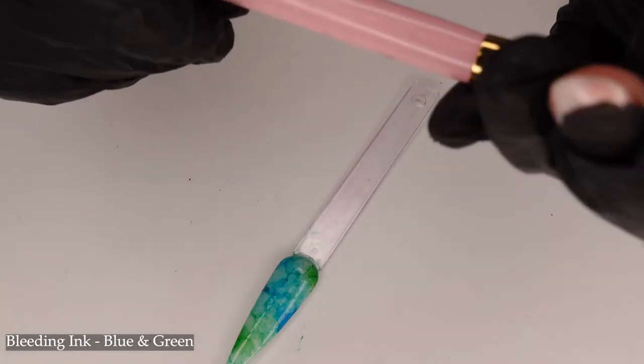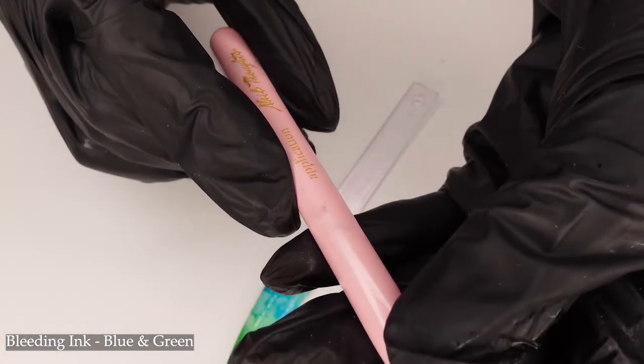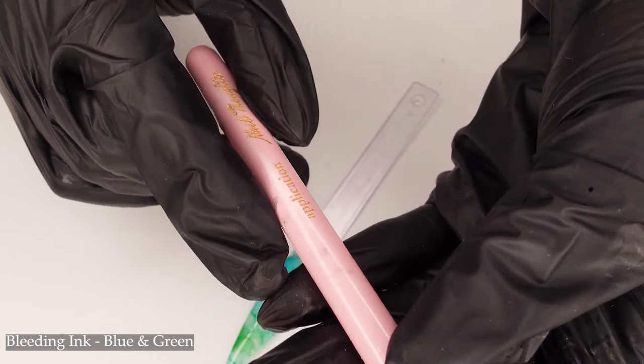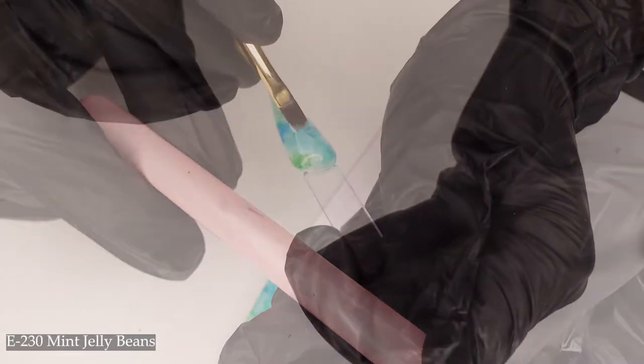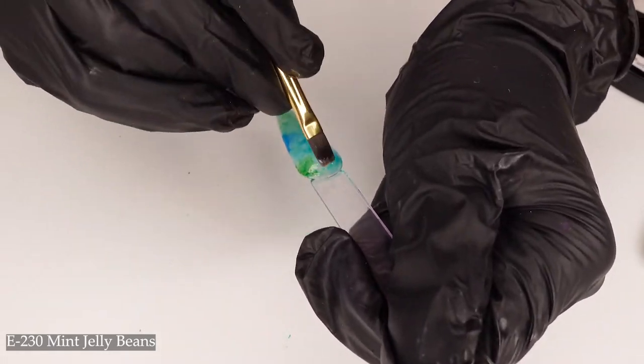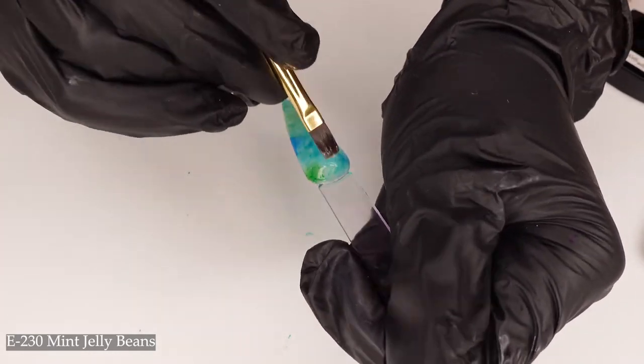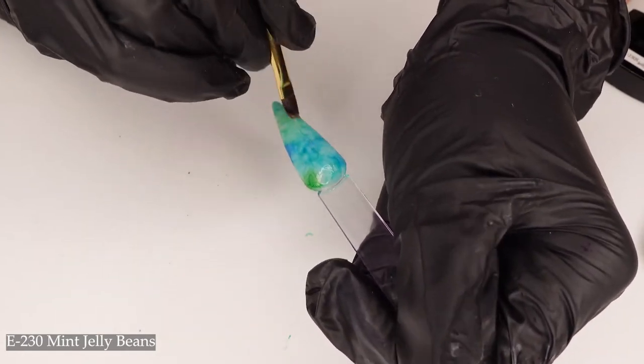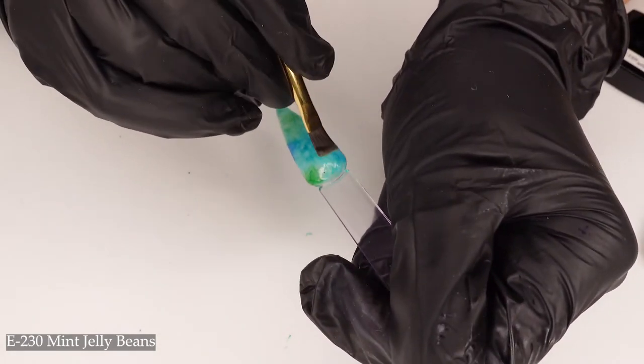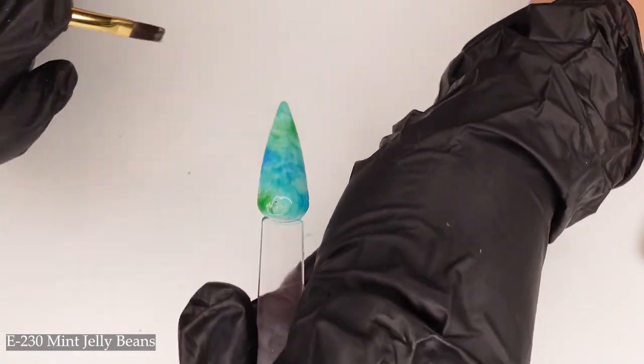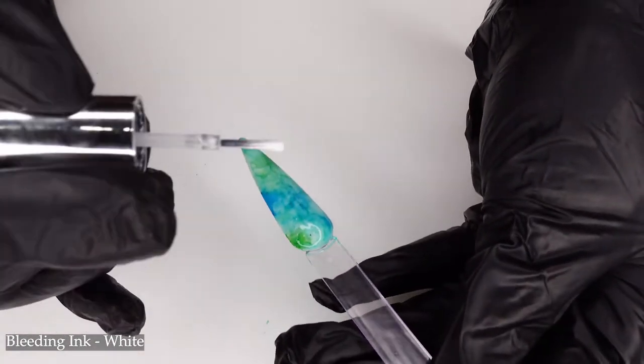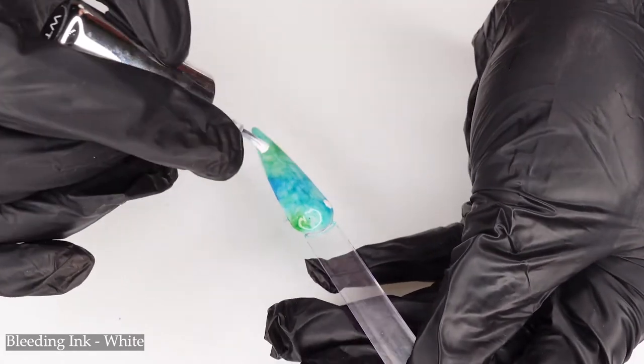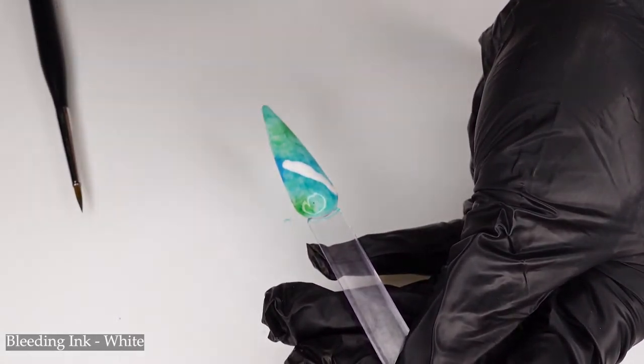I have mint jelly bean. I have my application brush from Nail Thoughts. I'm going to cure this now for 30 seconds. I decided I want a little bit of white on here, so I'm going to add it just like that.